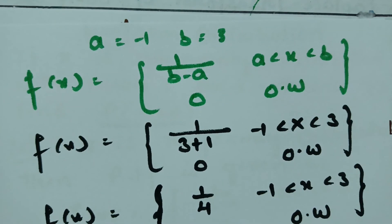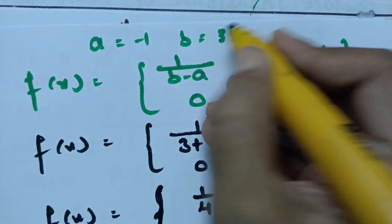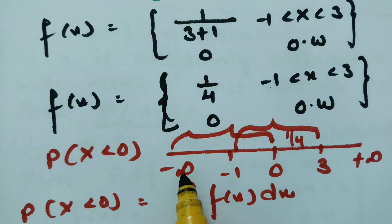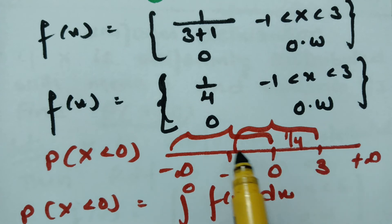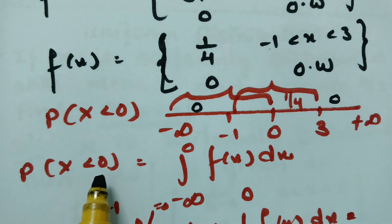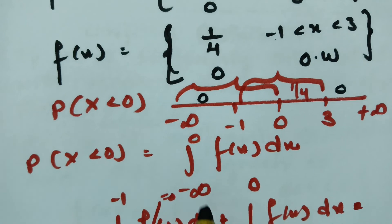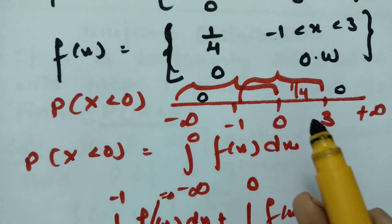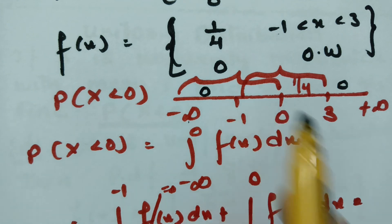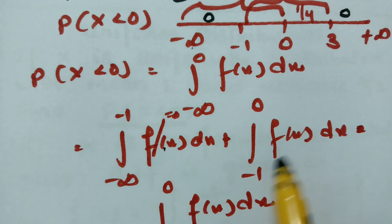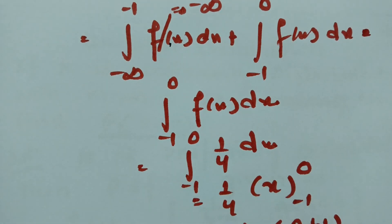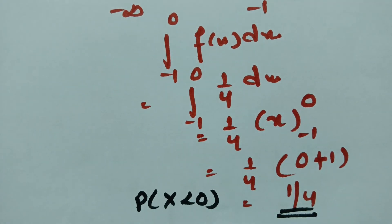To summarize: we got a = −1 and b = 3, so f(x) = 1/4 when x lies between −1 and 3. For P(X < 0), we integrate from −∞ to 0. The function is 0 from −∞ to −1, and 1/4 from −1 to 0. Evaluating gives the probability of X less than 0 as 1/4. Thank you for watching and staying till the end.